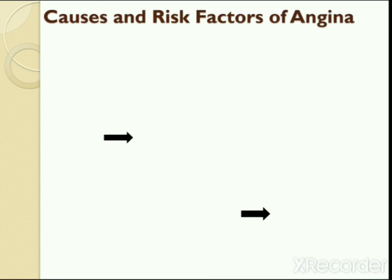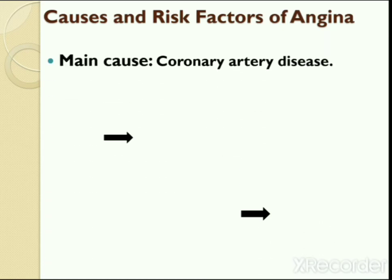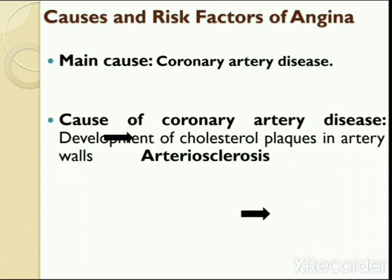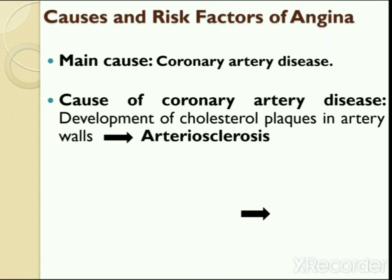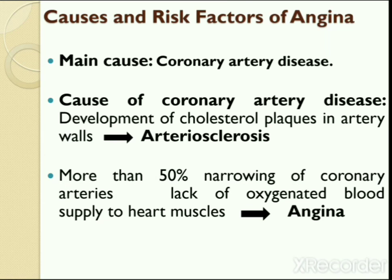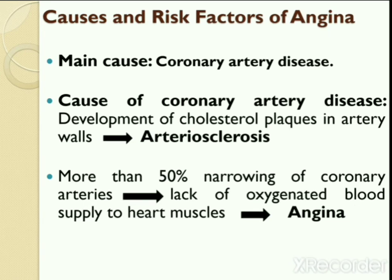The main cause of angina by far is coronary artery disease. Coronary arteries are responsible for supplying oxygenated blood to heart muscles. Disease of these arteries leads to development of cholesterol deposits, known as cholesterol plaque, in the artery walls. Accumulation of these hardened cholesterol plaques leads to narrowing of coronary arteries, a condition known as arteriosclerosis. If narrowing increases beyond 50%, the coronary arteries cannot supply adequate oxygenated blood to heart muscles or meet increased oxygen demand during physical activity or stress. This lack of oxygenated blood supply causes angina or chest pain. Arteriosclerosis is caused by smoking, high blood pressure, elevated cholesterol, and diabetes.